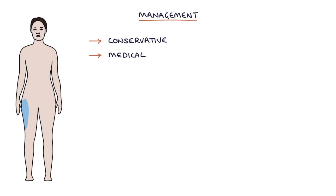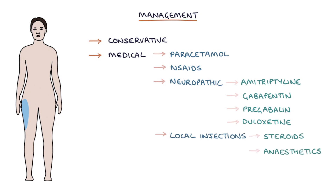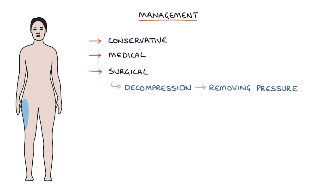Medical management is based around analgesia if pain is a feature, such as paracetamol, non-steroidal anti-inflammatory drugs, neuropathic analgesia such as amitriptyline, gabapentin, pregabalin, or duloxetine, and local injections of steroids or local anaesthetics. Surgical management may involve decompression — removing pressure on the nerve — transection — cutting the nerve — or resection — removing the nerve.